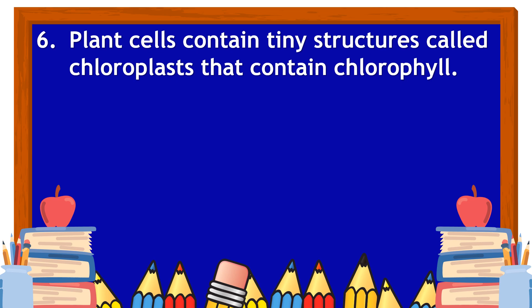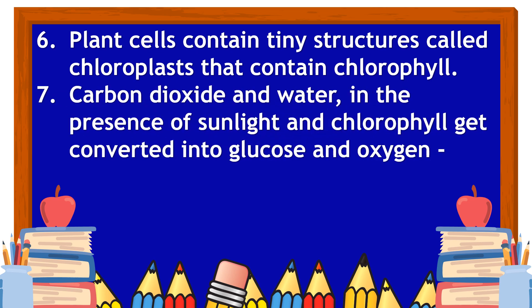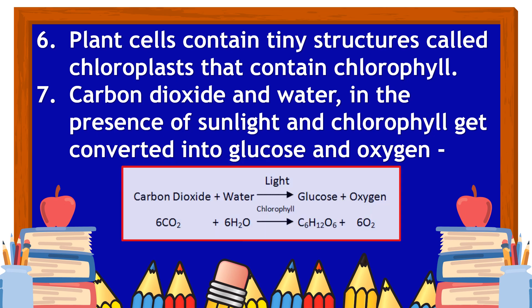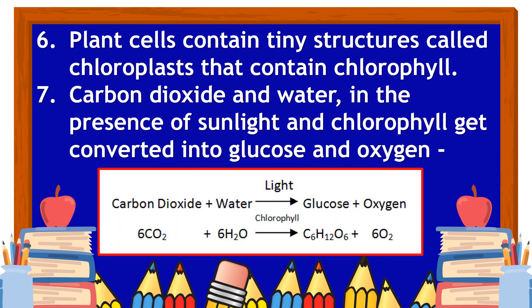Carbon dioxide and water in the presence of sunlight and chlorophyll get converted into glucose and oxygen. The equation is: carbon dioxide plus water, in the presence of sunlight and chlorophyll, results in glucose plus oxygen.